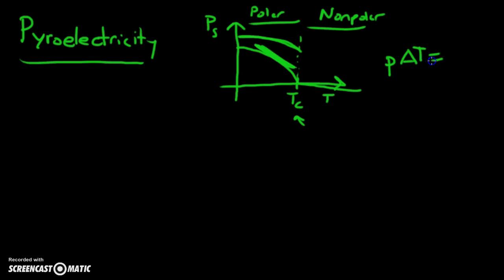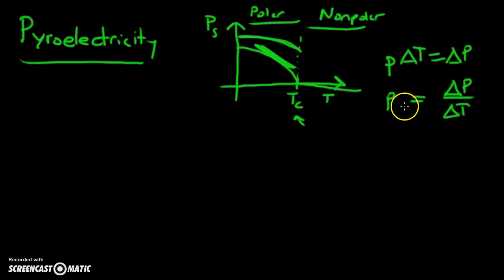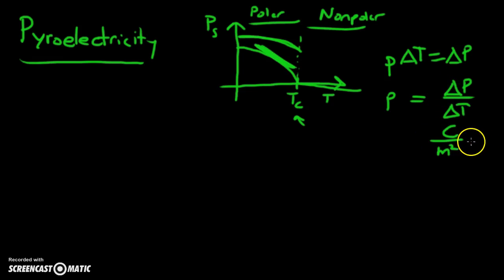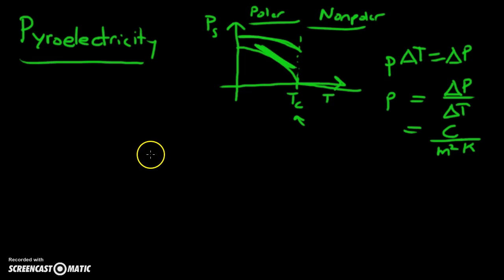This slope determines the pyroelectric coefficient p. The equation is: p times delta T equals the change in polarization. So the change in polarization divided by the change in temperature gives the pyroelectric coefficient, which has units of coulombs per meter squared — the unit of polarization — divided by kelvin for the temperature.